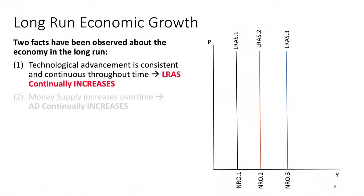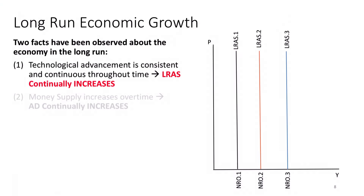Let's think about economic growth in the long run. There are two factors we can observe about the economy in the long run. The first is that we tend to have technological advancements that are continuous and consistent throughout time. As technology advances, we don't tend to regress back — we continue to improve. With improvements in technology, our resources and factors of production become more productive and efficient. Therefore, since we continually have technological advancements, the long run aggregate supply curve shifts out over time.